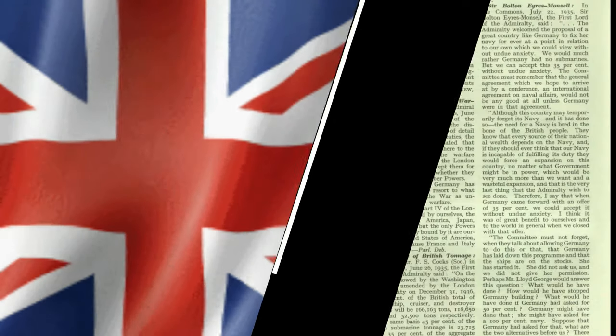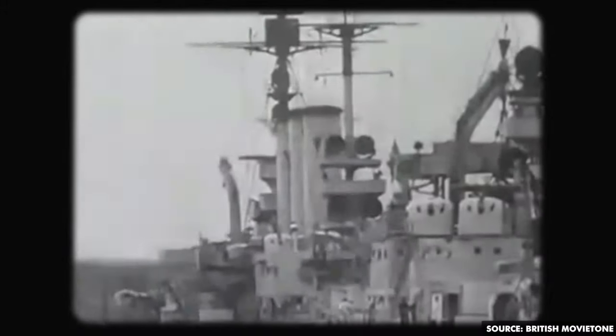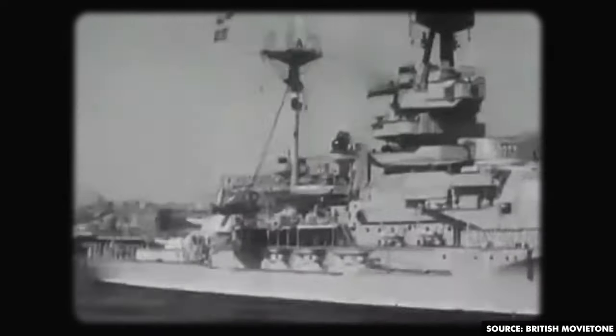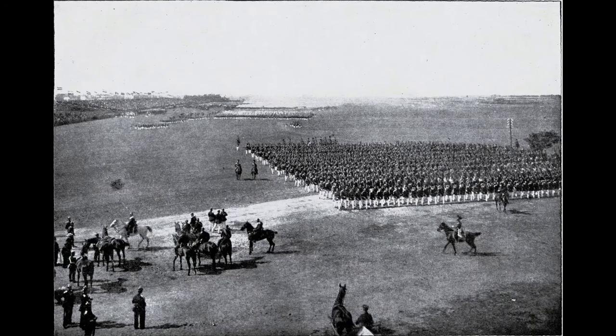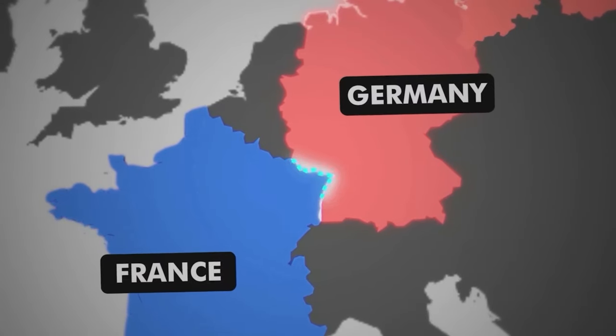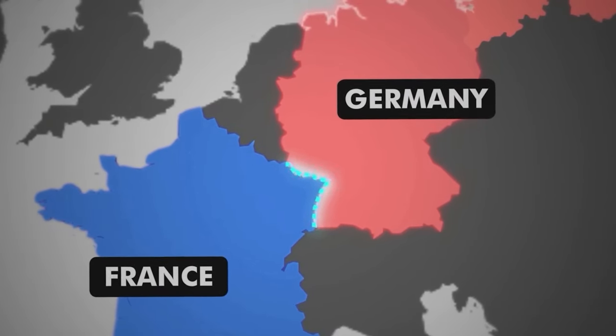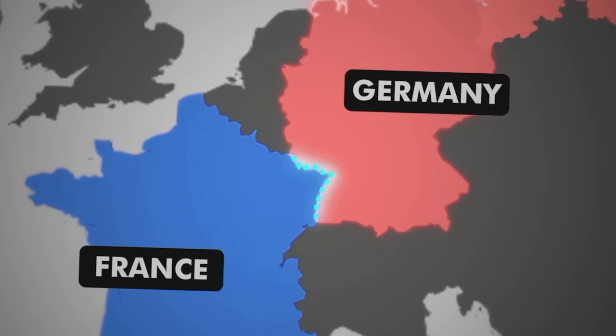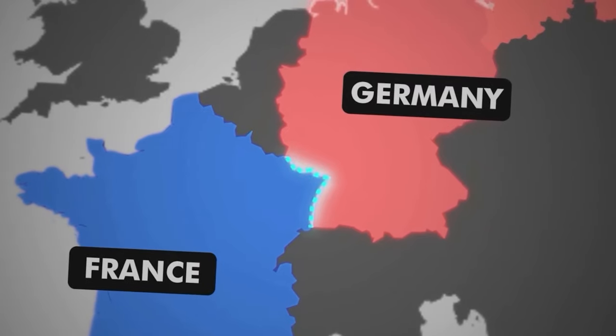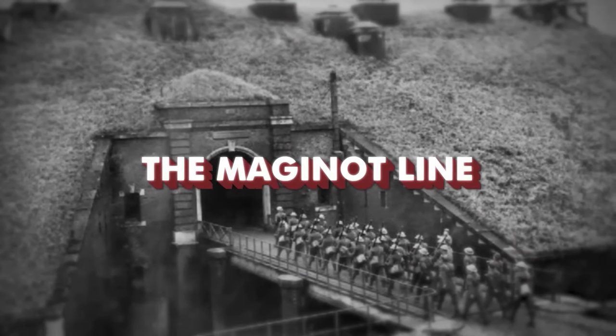In June 1935, Britain signed the Anglo-German Naval Agreement, which thoroughly recognized that Hitler had the authority to form his navy. Germany could have an independent navy, but the growing militarization in Germany alerted France. France built a 450-kilometer-long fortification on its eastern border, named the Maginot Line.